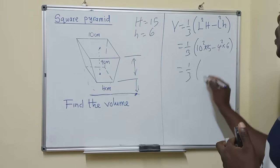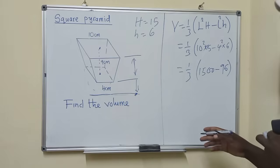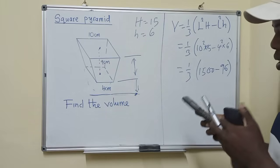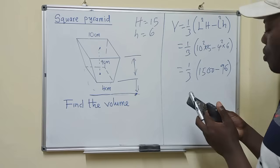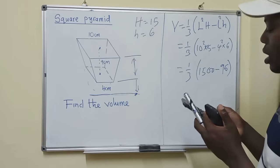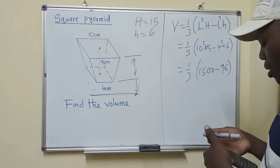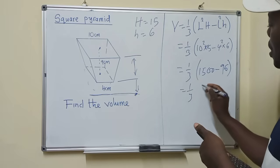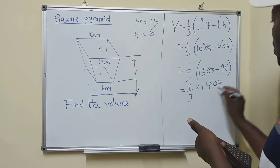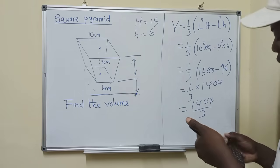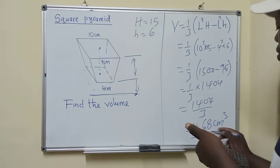So now I can work out things. It will be 1,500 minus 96. Let me confirm on my calculator: 10 squared times 15 gives 1,500, and 4 squared times 6 gives 96. So inside the brackets we get 1,404. Divided by 3, our volume is 468 centimeters cubed. So this is our answer.